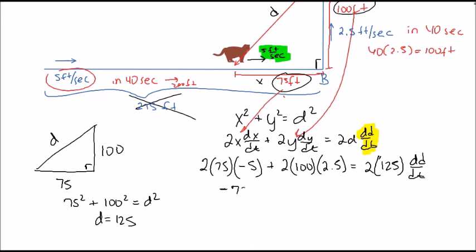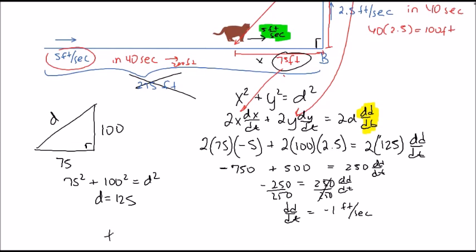We have negative 750 plus 500 is negative 250, which equals 250(dd/dt). So dd/dt is equal to negative 1 foot per second. The distance between the cat and the balloon is decreasing at t equals 40 at a rate of negative 1 foot per second.